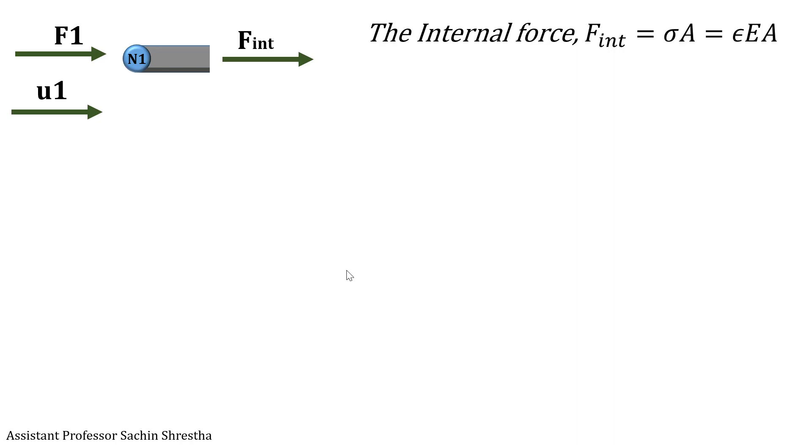The strain can be obtained as the ratio of change in displacement by the original length. Thus, we will have the FINT as EA by L times (U2 minus U1). In order to maintain equilibrium, the summation of forces should be zero.